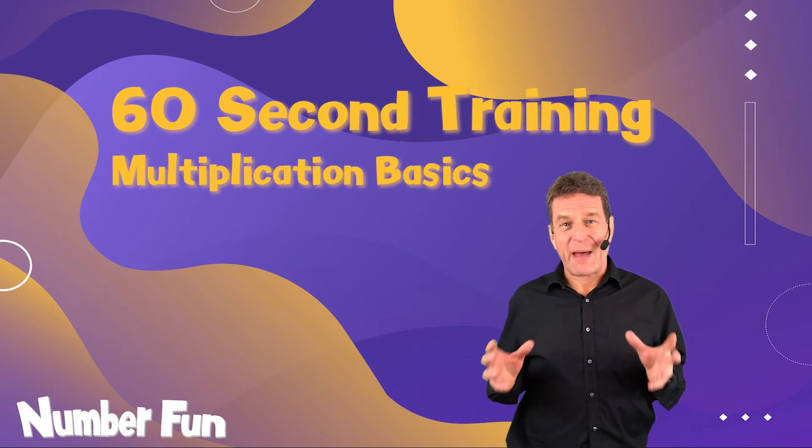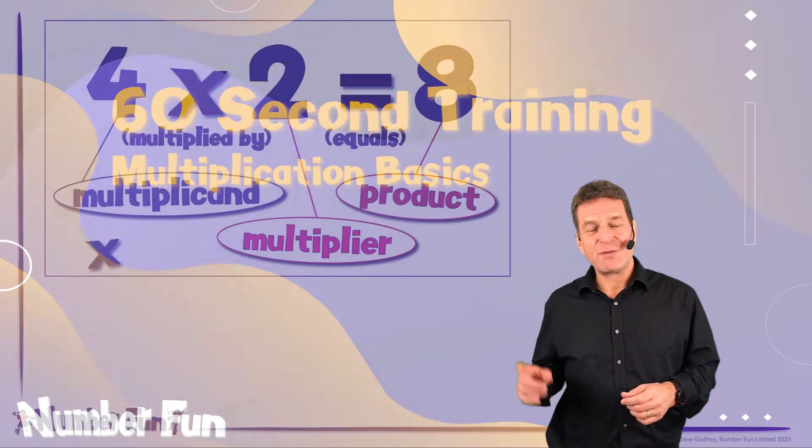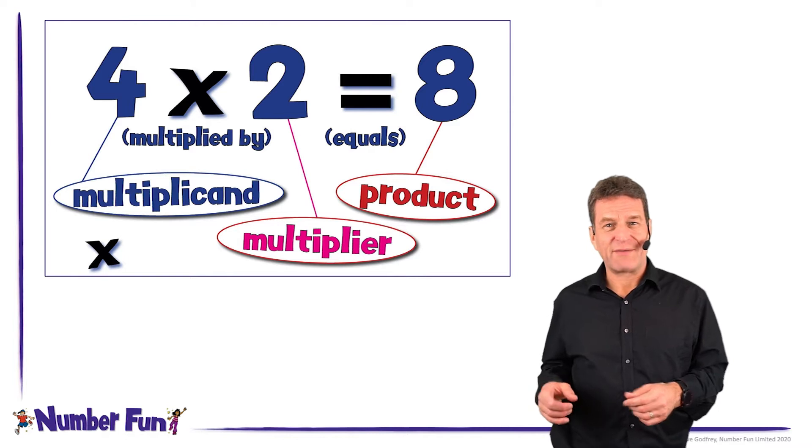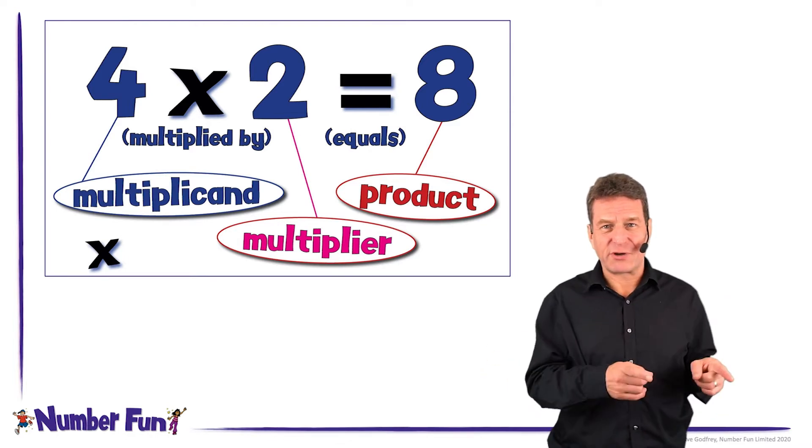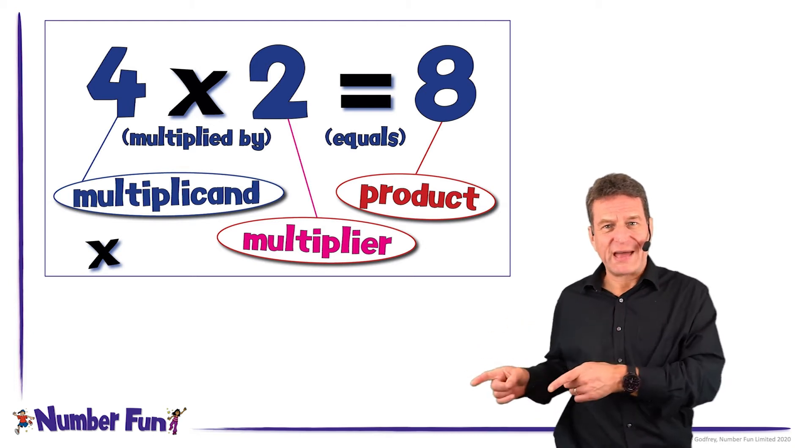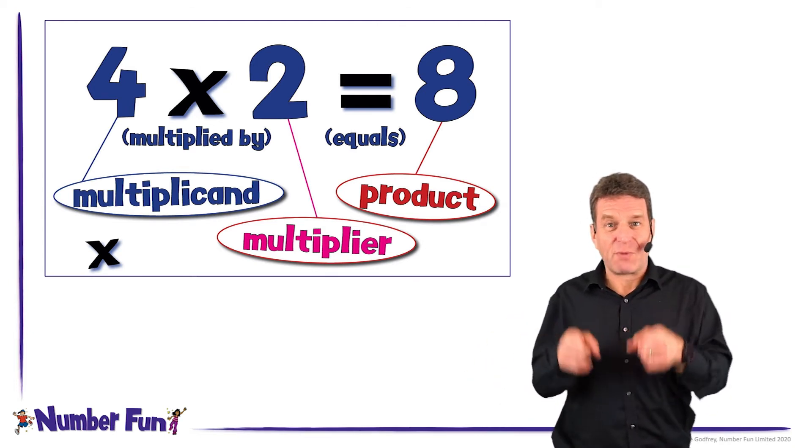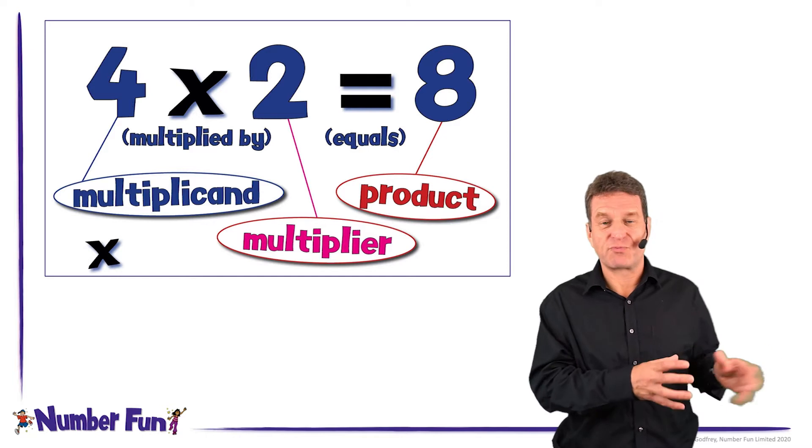Here are some basics about multiplication. In a multiplication calculation we have the multiplicand, the multiplier, and the product. So it's the multiplicand multiplied by the multiplier that equals the product.